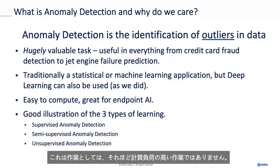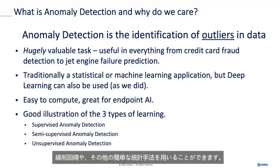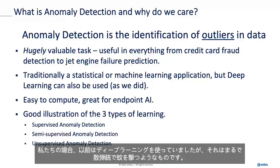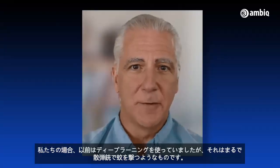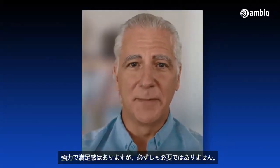As these things go, anomaly detection is not a very computationally intense task. It is a mathematical thing. You can use linear regressions or other simpler statistical or machine learning methods. In our case, we used deep learning, which is kind of like using a shotgun to go after mosquitoes — enormously satisfying, but sometimes not needed. But it's a great opportunity to show how you would use deep learning.